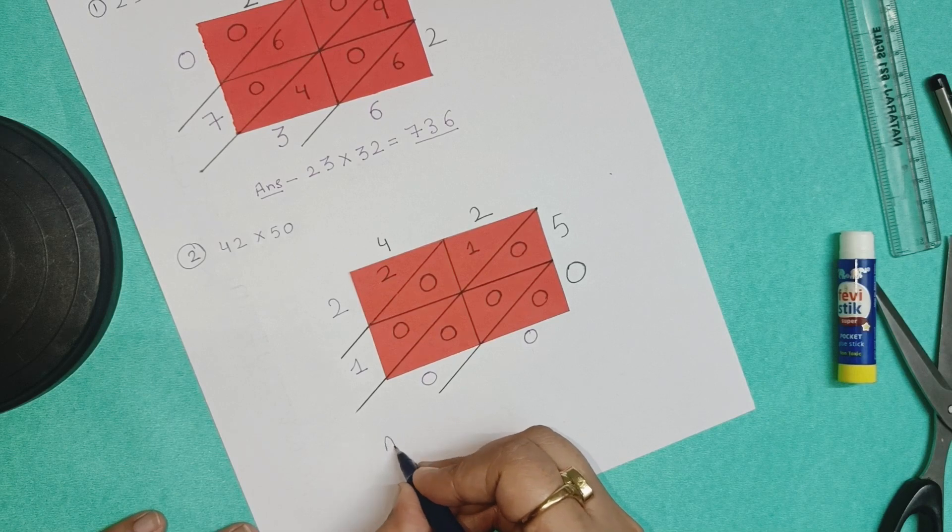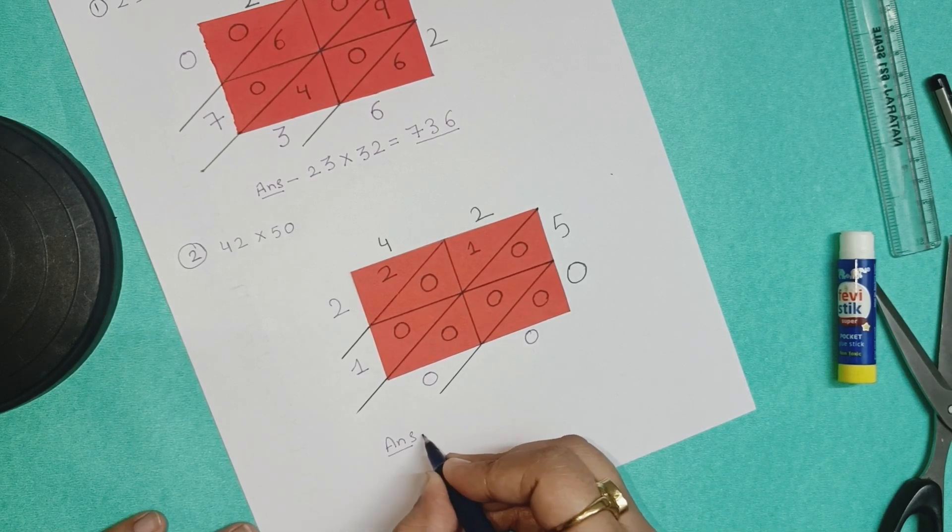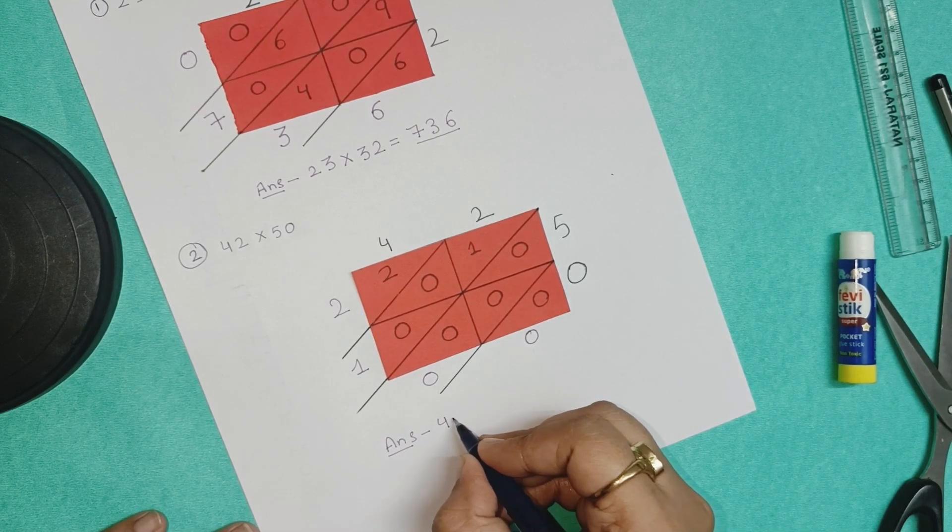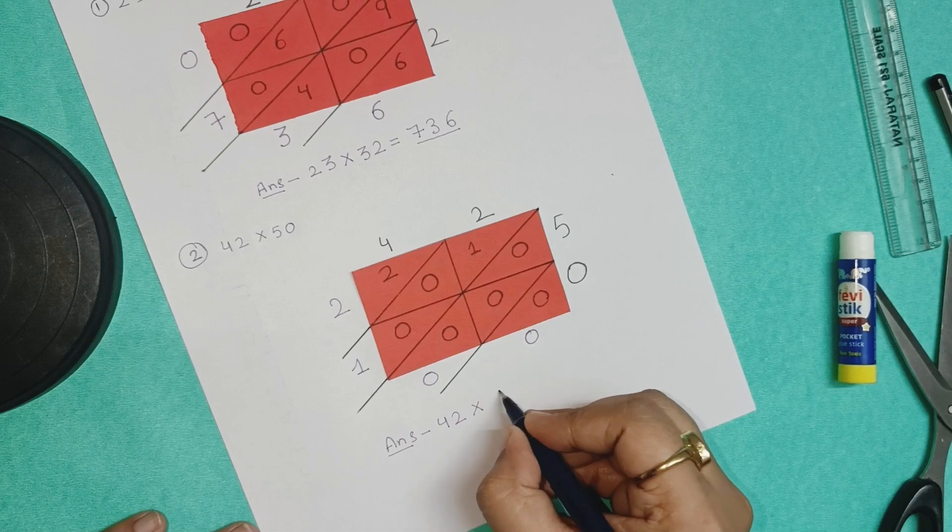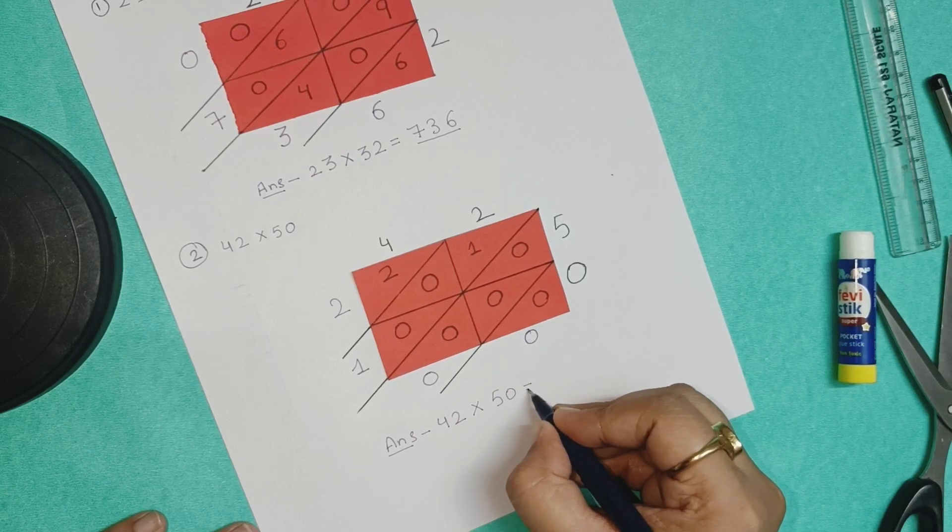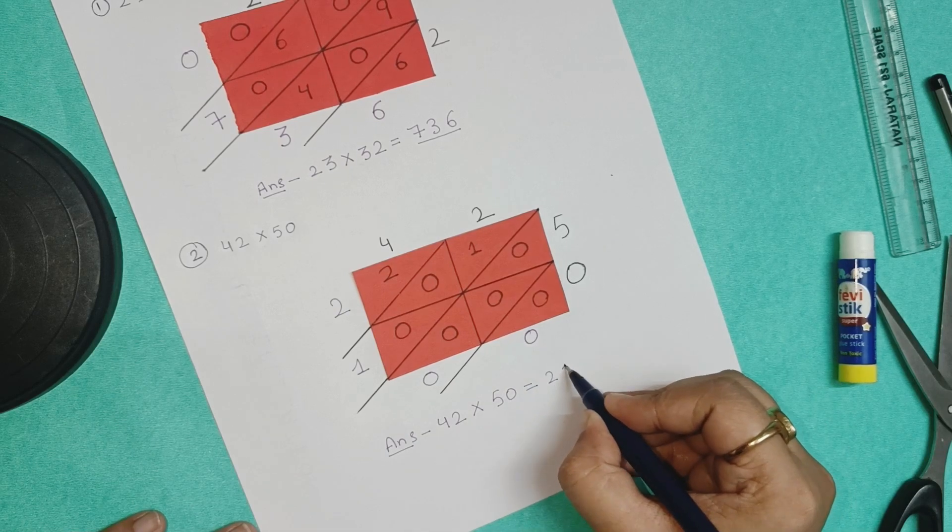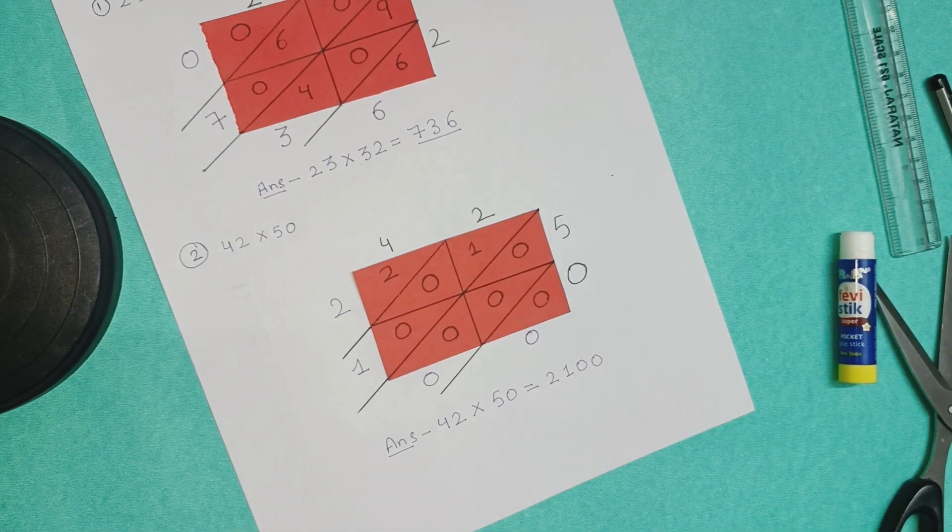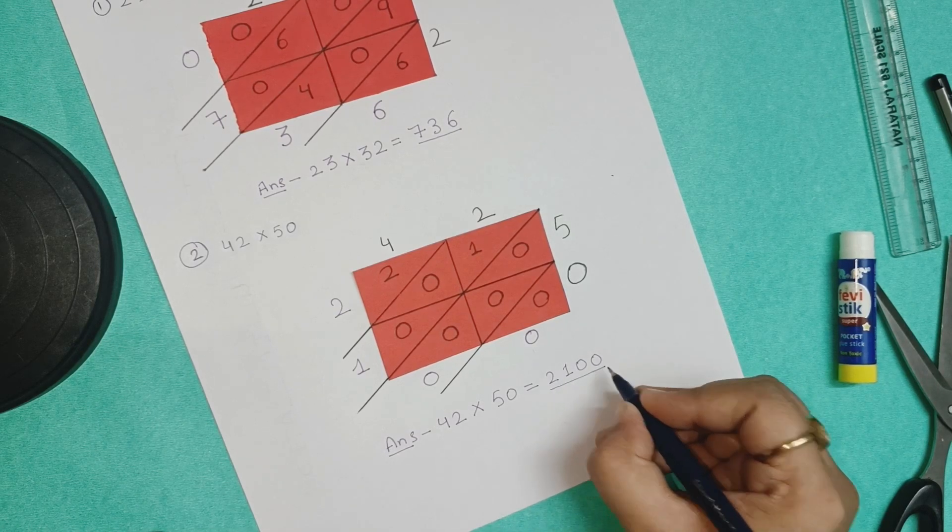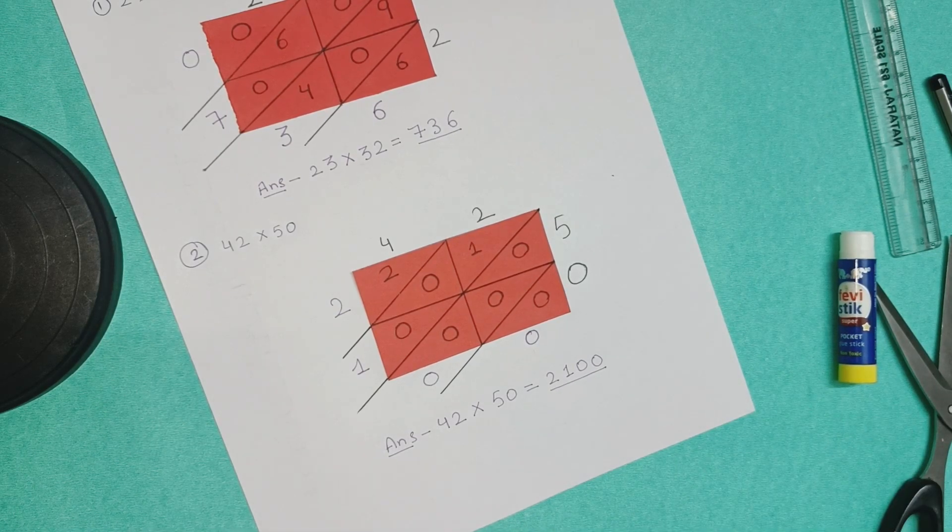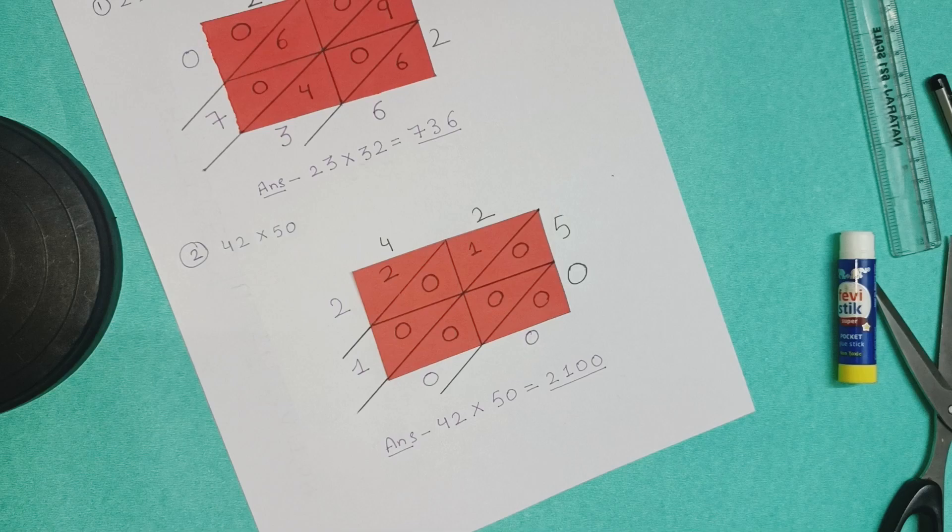So the answer is 2100. 42 times 50 is equals to 2100. Thank you so much for joining. Don't forget to subscribe to our channel.